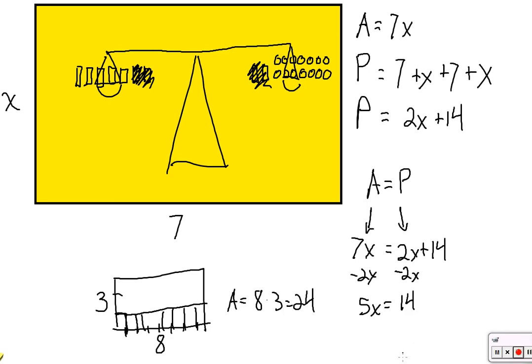And if you had the equation 5x equals 14, what would you do? You would divide both sides by 5. So x equals 14 over 5, which is 2.8.